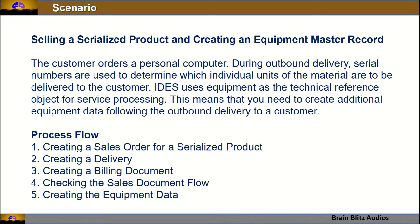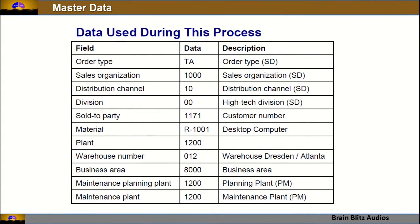Each individual product will have a serial number assigned to it. When you deliver it, you deliver it against that serial number, which becomes the reference for that product. Whenever the customer raises an incident or request for service, you will process it against that equipment, which allows you to map warranty — whether that product is within warranty or not. The process flow includes creating a sales order, delivery, billing document, and then creating equipment data.